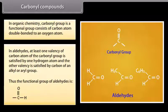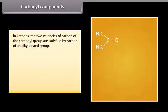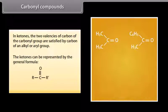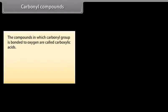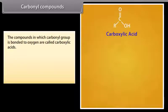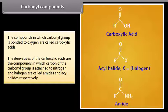Thus, the functional group of aldehydes is CHO. In ketones, the two valencies of carbon of the carbonyl group are satisfied by carbon of an alkyl or aryl group. Ketones can be represented by the general formula R–C(=O)–R', where R and R' are alkyl groups. The compounds in which a carbonyl group is bonded to oxygen are called carboxylic acids. Derivatives of carboxylic acids in which the carbonyl carbon is attached to nitrogen or halogen are called amides and acyl halides, respectively.